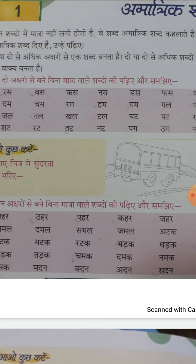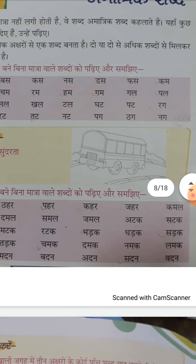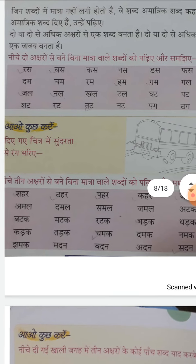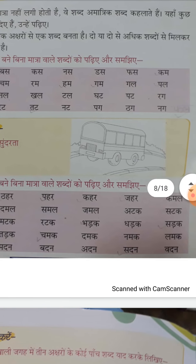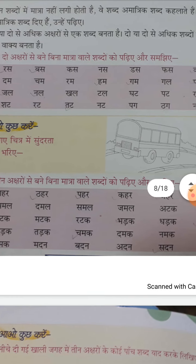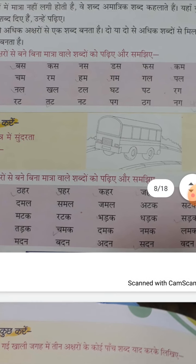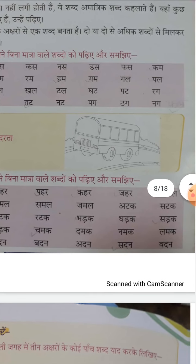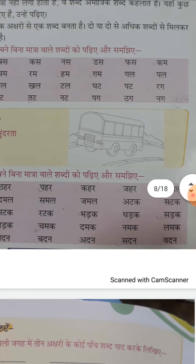Next पढ़ते हैं — कामाला कमल, आमाला अमल, दामाला दमल, सामाला समल, जामाला जमल। इसी तरह — मदाना मदन, बदाना बदन, अदाना अदन, सदाना सदन। ठीक है?